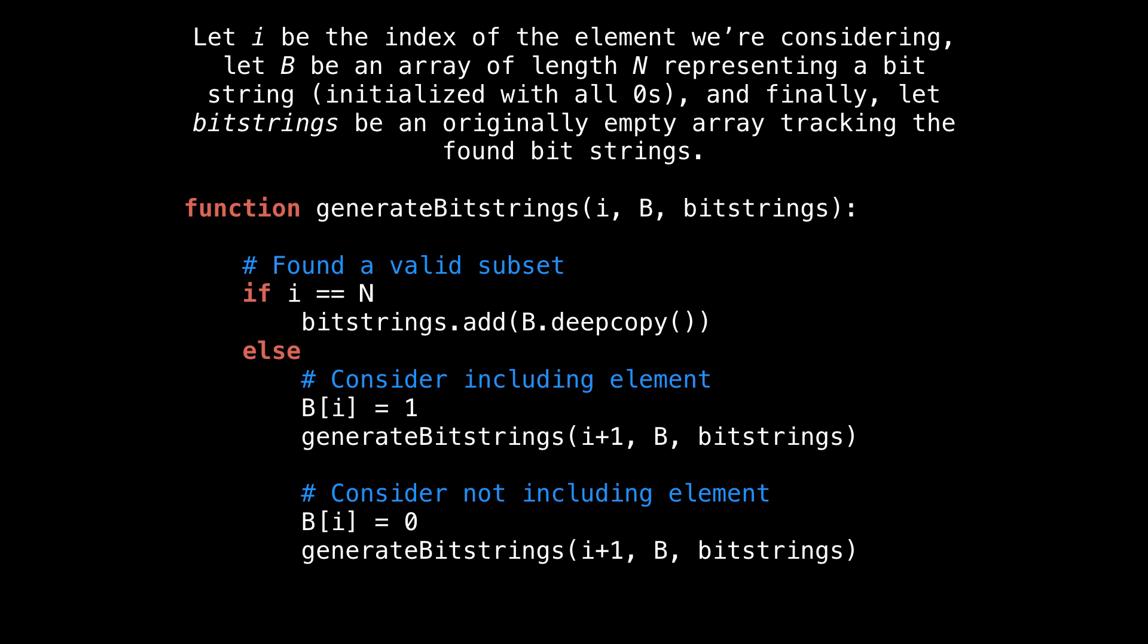To generate the bit strings, we make two recursive calls. One which considers including the current element that is setting the bit to one and the other which considers not including an element by setting the bit to zero. With only these two calls, we are able to generate all bit strings because for every position, either a bit is set or not set.